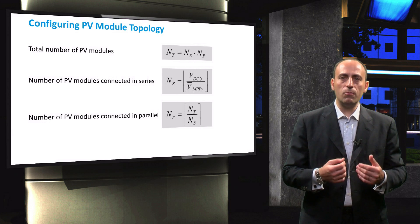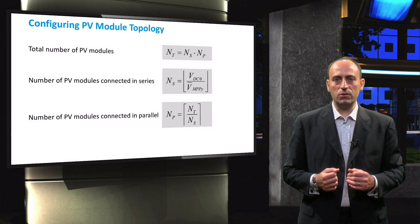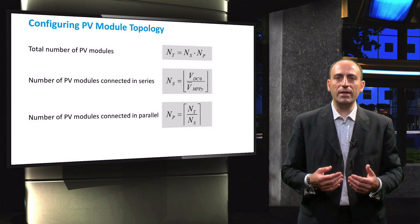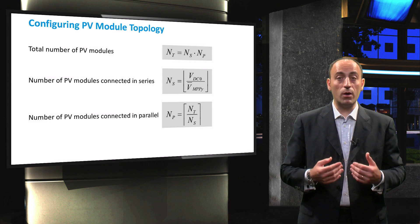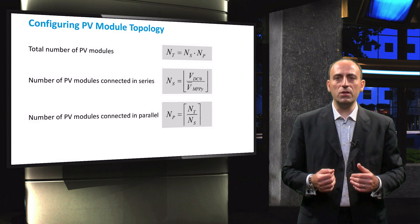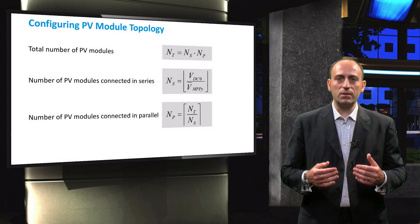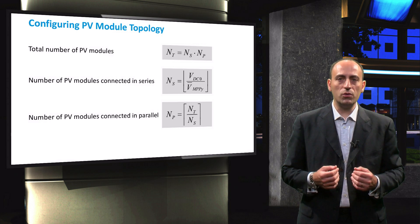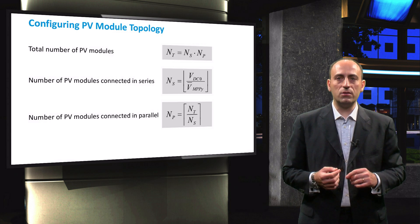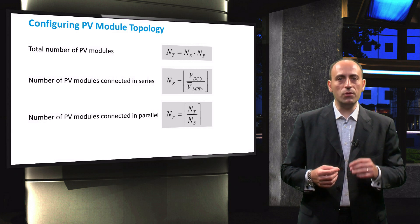Next, we determine the number of parallel connected strings. This is achieved by dividing the total number of required modules by the number of series connected modules. Just as with the total number of modules, the number of parallel connected strings should be rounded up to the nearest integer.